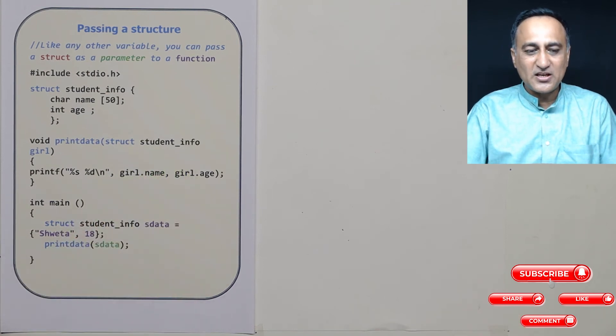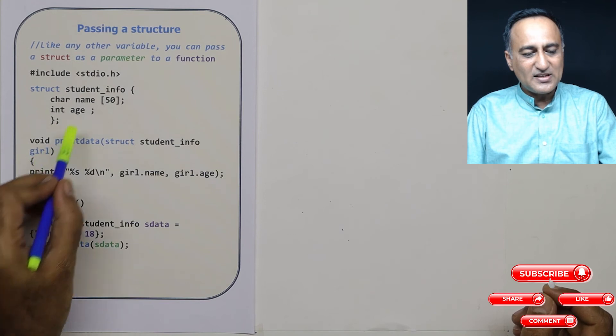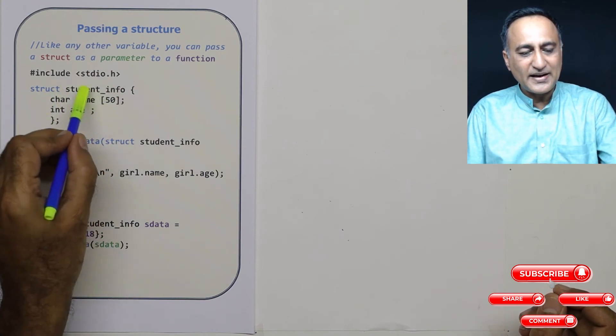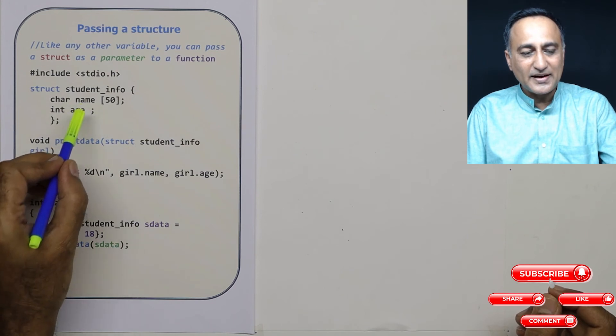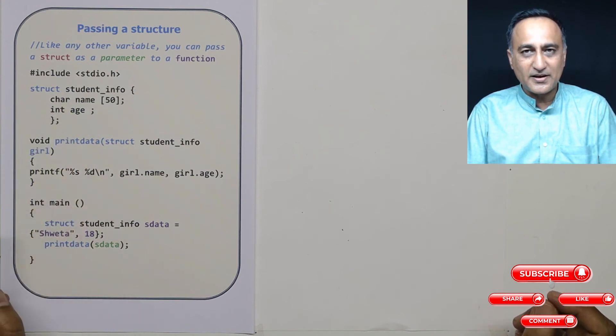Just like you have an array i, j, k, this girl is of this particular data type. That means it's of a structure data type—girl is of a structure data type.